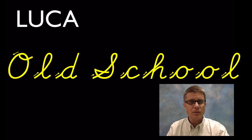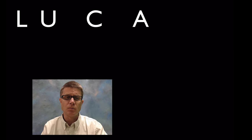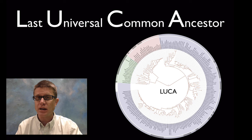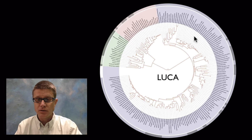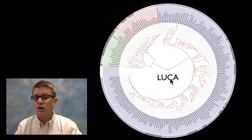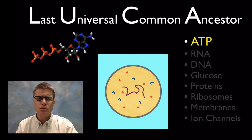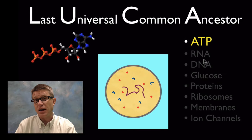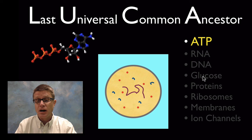ATP is ancient — it's been around from the beginning of life. It was used by LUCA, the last universal common ancestor, the ancestor of all cells on our planet. Looking at the phylogenetic tree of all life — eukaryotes, archaea, and bacteria — scientists believe that first ancestor had a few key properties: it used ATP, had RNA and DNA, the ability to use glucose, proteins, ribosomes, membranes, and ion channels.